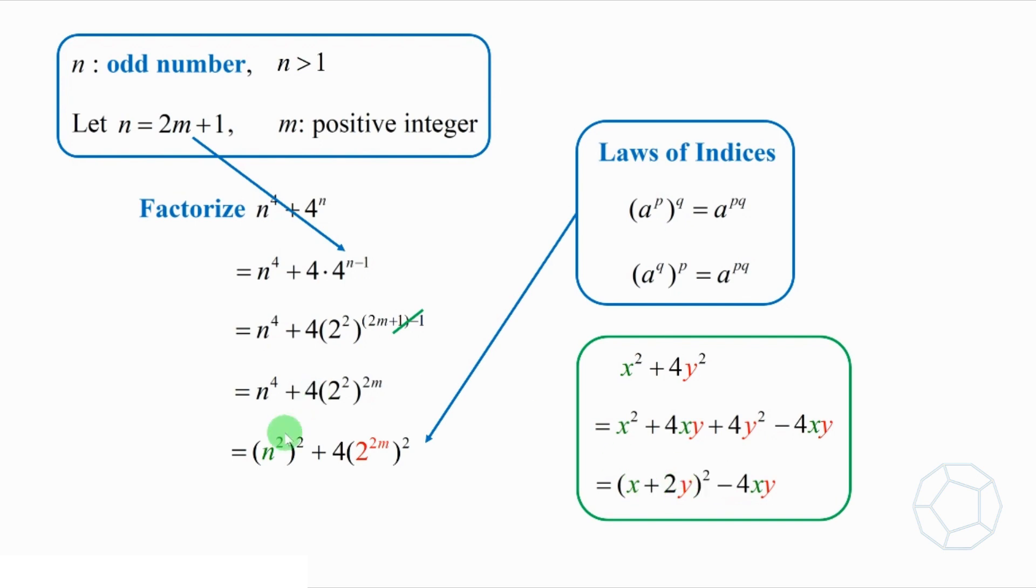Let's put x equals n squared and y equals 2 to the power of 2m. Therefore, we get n squared plus 2 times 2 to the power of 2m whole square minus 4n squared times 2 to the power of 2m. Is this form good enough to proceed?